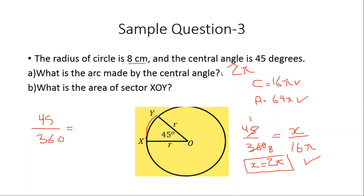The sector area is unknown — let that be y — and the total area is 64π. Solving: 45 over 360 simplifies to 1/8, then 64π moves to the other side, and 64 divided by 8 is 8, so y = 8π.